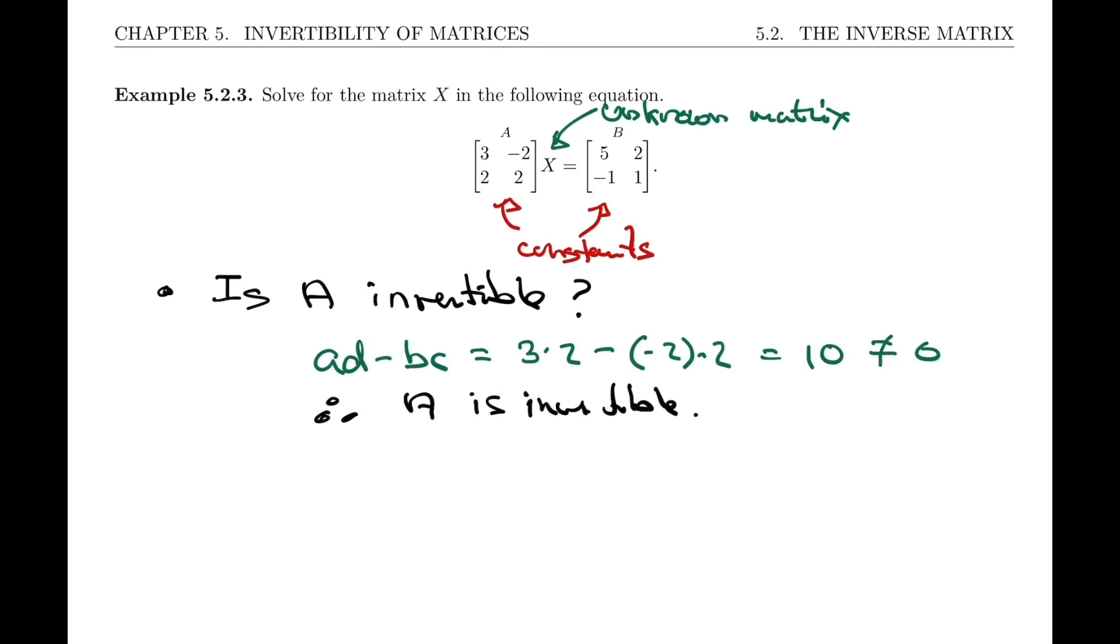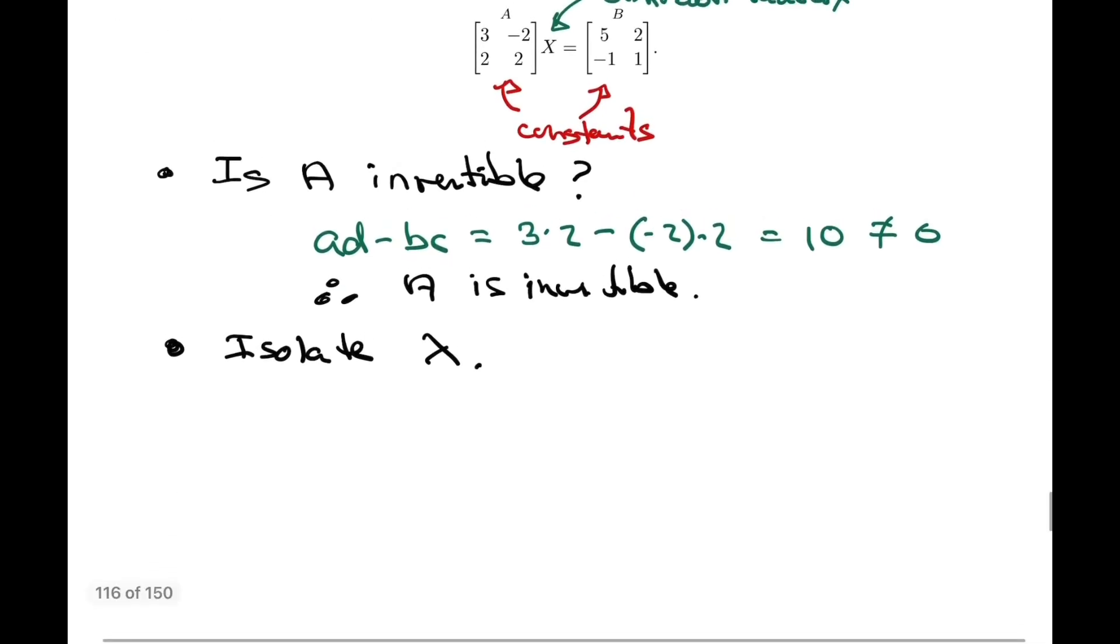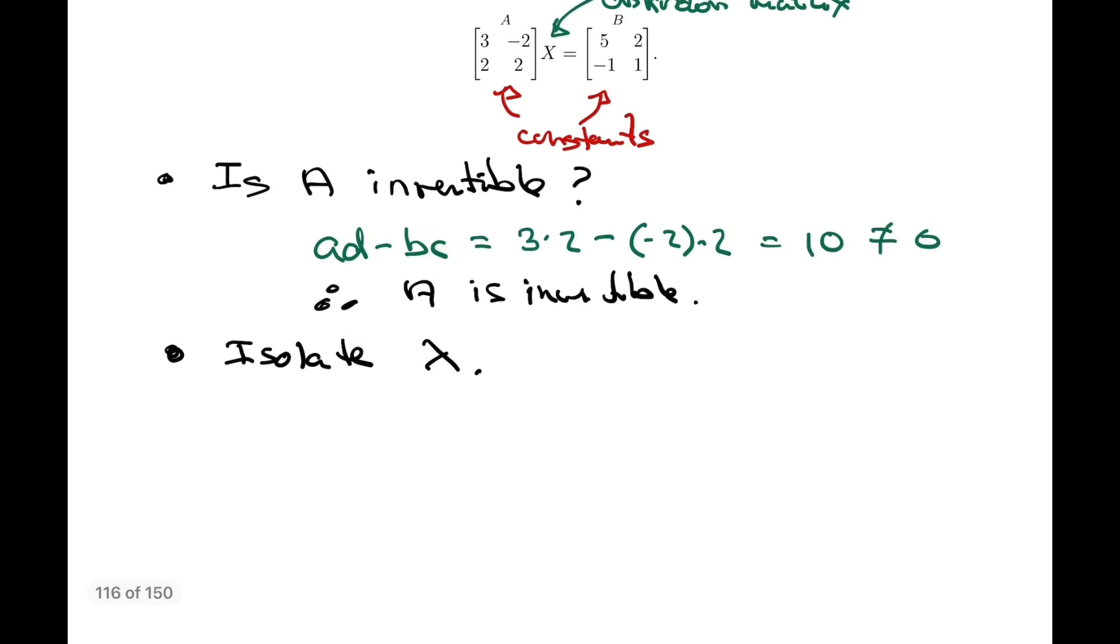The second step before we even find the inverse of A is let's isolate X in the equation, just like we did with real number equations. We started with AX equals B, so isolating X means multiplying both sides by A inverse. A inverse times AX equals A inverse times B.